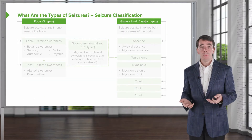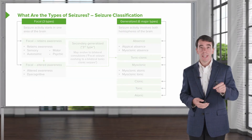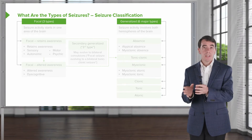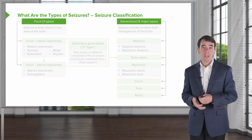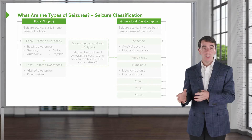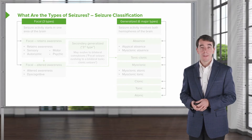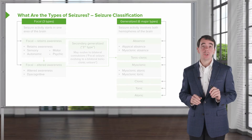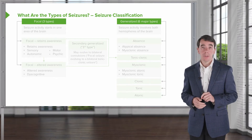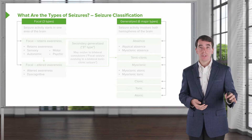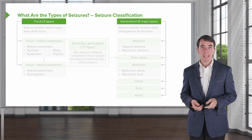That categorization is helpful because seizures have many different descriptions from patients. But we can categorize them as either focal onset or generalized onset. We will learn that there are about eight different seizure types that occur in patients, and we can categorize all those clinical descriptions according to those eight seizure types.